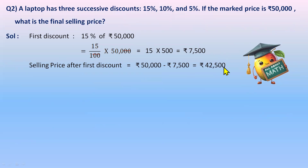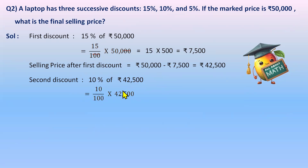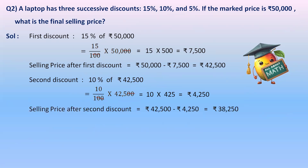For the second discount, 10% will be applied on the reduced price of 42,500 rupees — not on 50,000. Remember, this step is really important. Second discount = 10% of 42,500 = 10/100 × 42,500 = 4,250 rupees. Selling price after the second discount: 42,500 − 4,250 = 38,250 rupees. Every time we use the reduced price, not the original marked price.